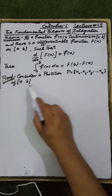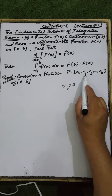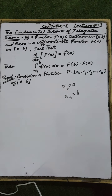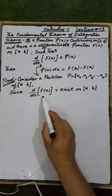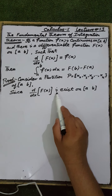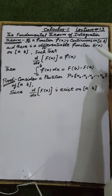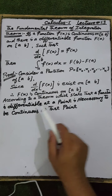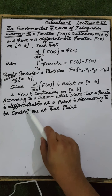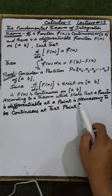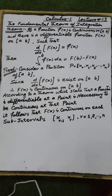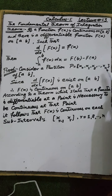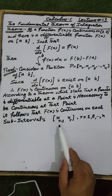Consider the partition P of the interval [a, b]. The partition P contains the elements x₀, x₁, x₂, up to xₙ, where x₀ equals a and xₙ equals b. Since the derivative of F(x) exists on the interval [a, b] by hypothesis, F(x) is continuous on the given interval, according to the theorem which states that a function differentiable at a point must be continuous at that point. It follows that F(x) is continuous on the interval [a, b].